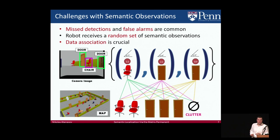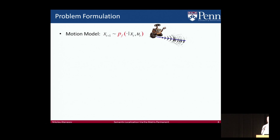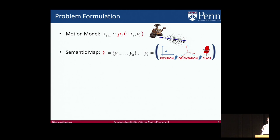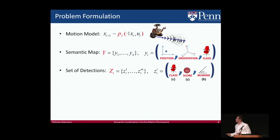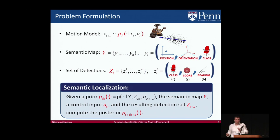Now for a more precise formulation of the problem. We assume a motion model describing the distribution over robot poses given a control. We have a semantic map consisting of a set of objects, each minimally consisting of position, orientation, and class — this could also include shape priors and other prior information. Our detections are a set of semantic detections, each consisting of a detected class, detection score, and bearing. The semantic localization problem is: given a prior and all these components, compute the posterior.